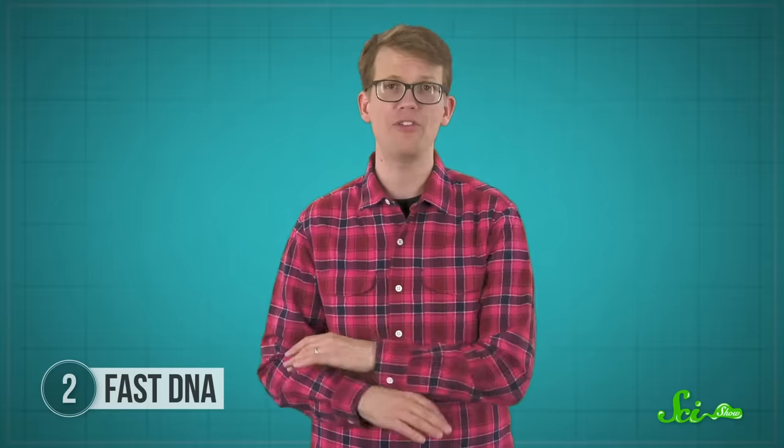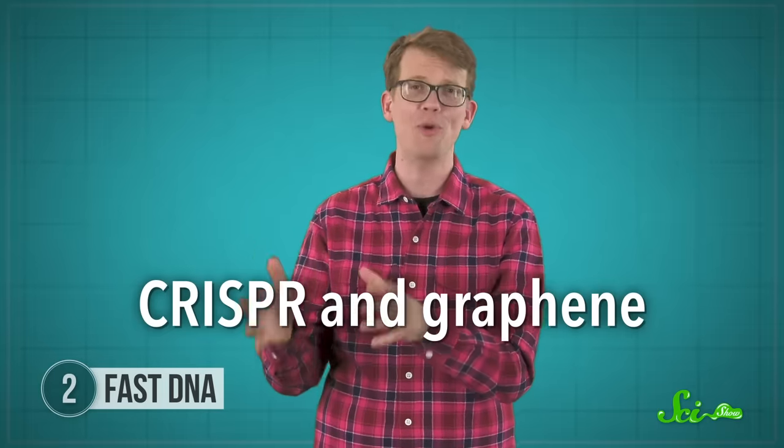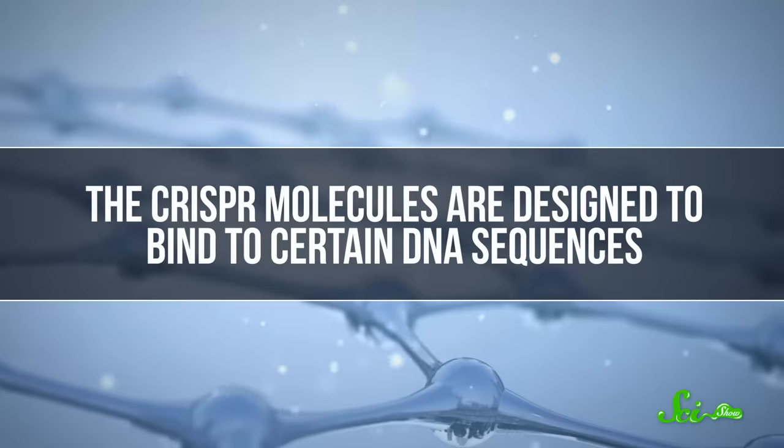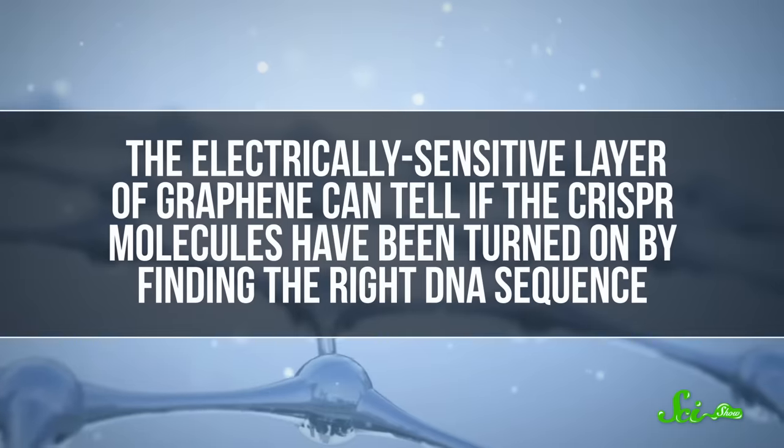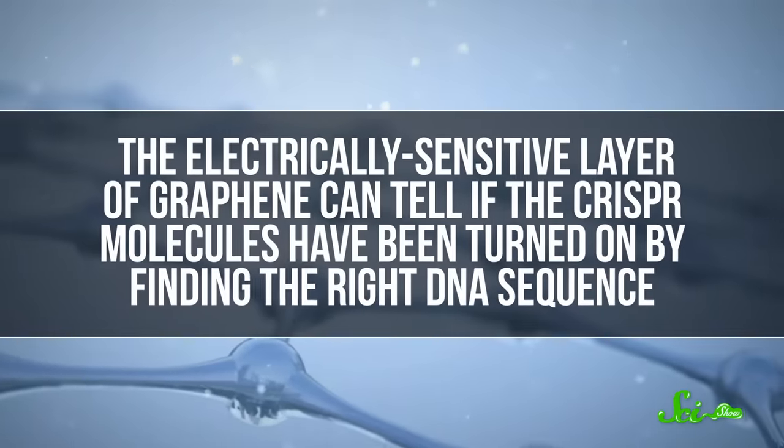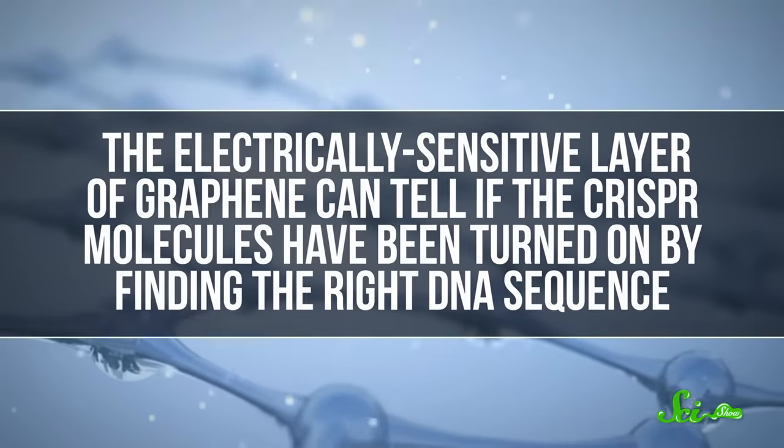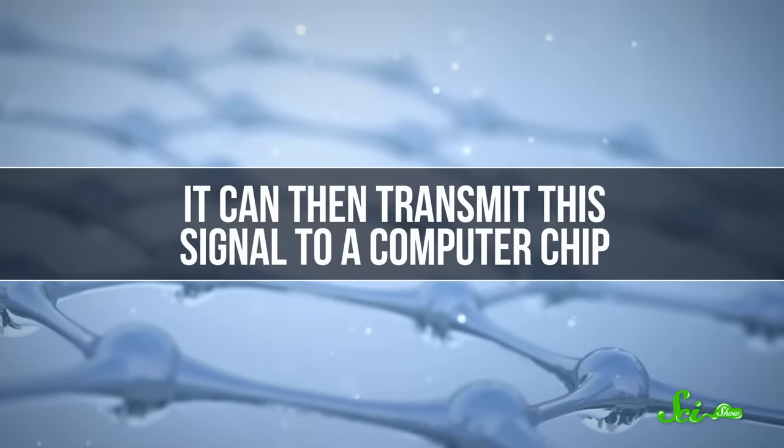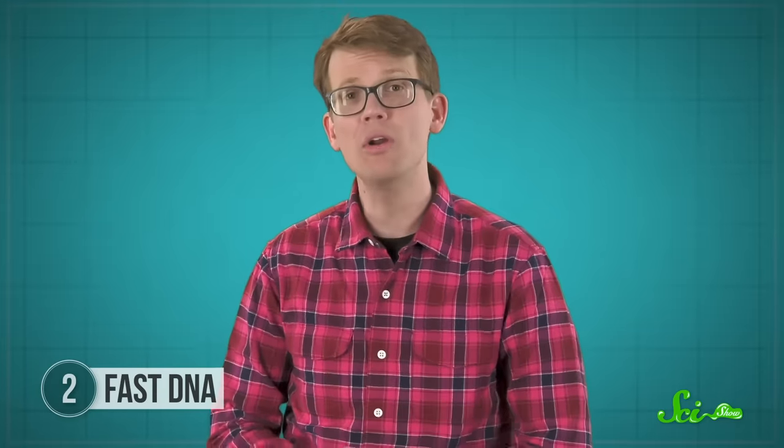And in 2019, researchers announced that they'd found a way to skip the copying step altogether by using a chip loaded with CRISPR and graphene instead. The CRISPR molecules are designed to bind to certain DNA sequences, while the electrically sensitive layer of graphene can tell if the CRISPR molecules have been turned on, so to speak, by finding the right DNA sequence. It can then transmit this signal to a computer chip. So scientists might be able to get DNA sequences in minutes.